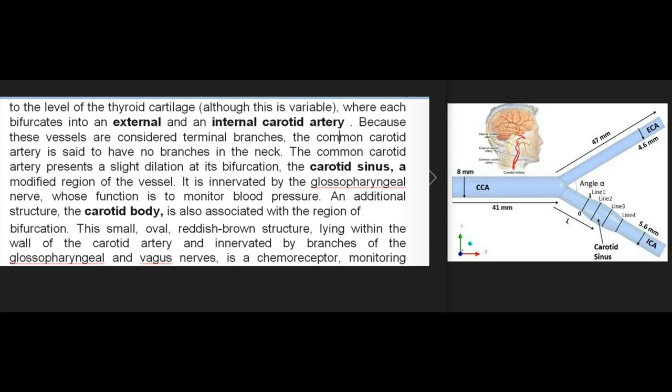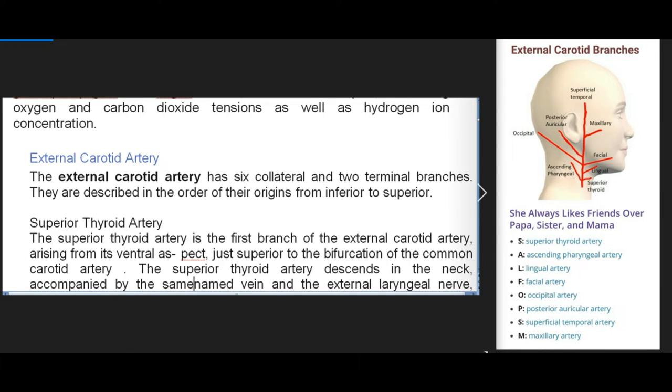The common carotid artery presents a slight dilation at its bifurcation called the carotid sinus, innervated by the glossopharyngeal nerve, which monitors blood pressure. An additional structure, the carotid body, is also associated with the region of bifurcation. This small oval reddish-brown structure lies within the wall of the carotid artery and is innervated by branches of the glossopharyngeal and vagus nerves. It is a chemoreceptor monitoring oxygen and carbon dioxide tensions as well as hydrogen ion concentration.